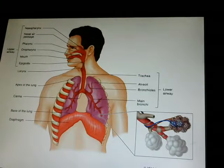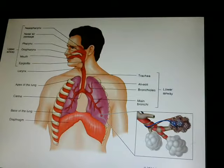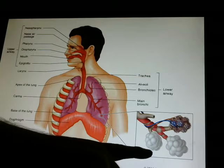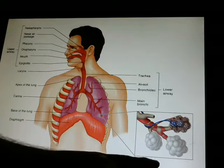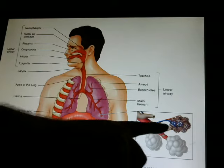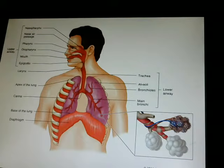Here's a nice picture of your airway system — upper airway, lower airway, and down in here the little sacks called your alveoli. We'll talk more about them.